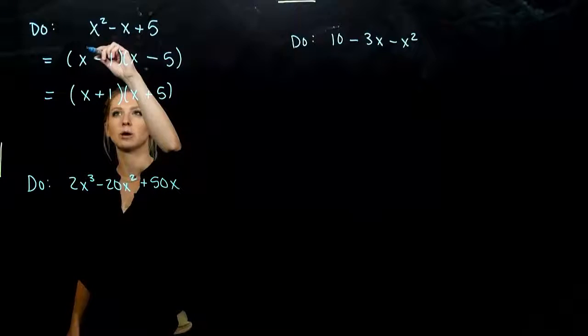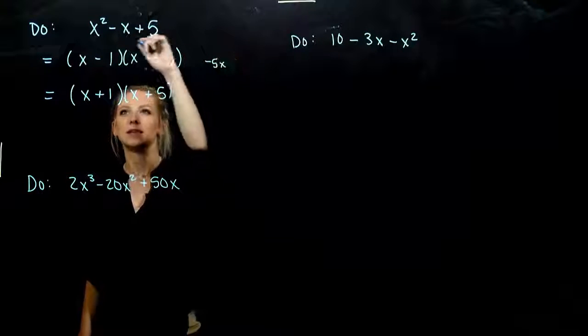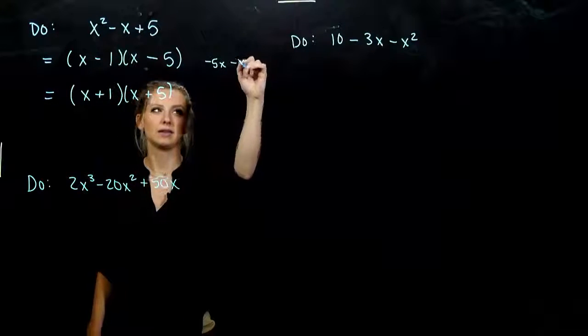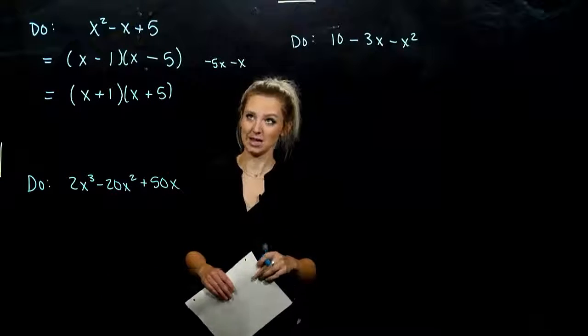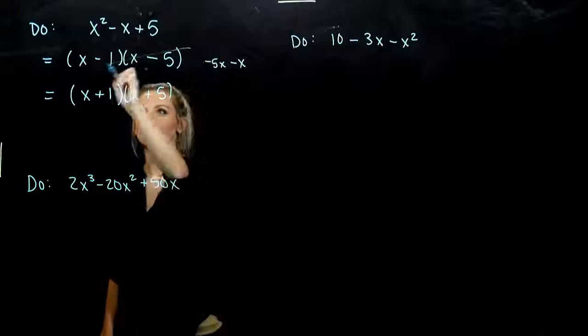We get the first, the x squared, but our outer is going to give us negative 5x and then minus x. So I've got negative 6 in the middle here, but I'm looking for negative 1. So this one's out.